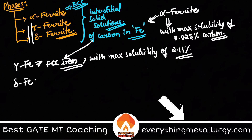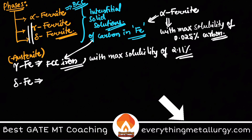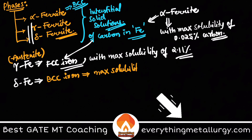Gamma or FCC iron is famously called austenite. The temperature range also matters — having delta ferrite at room temperature is essentially impossible at equilibrium; you might achieve it with rapid cooling or some modification. Delta iron is again a BCC iron with a maximum solubility of 0.09 weight percent carbon.